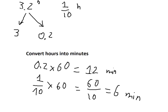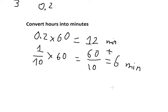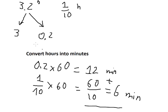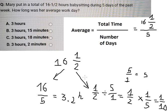Now we can add 12 and 6 to get 18. So we have 3 hours, 18 minutes, and that is option C.